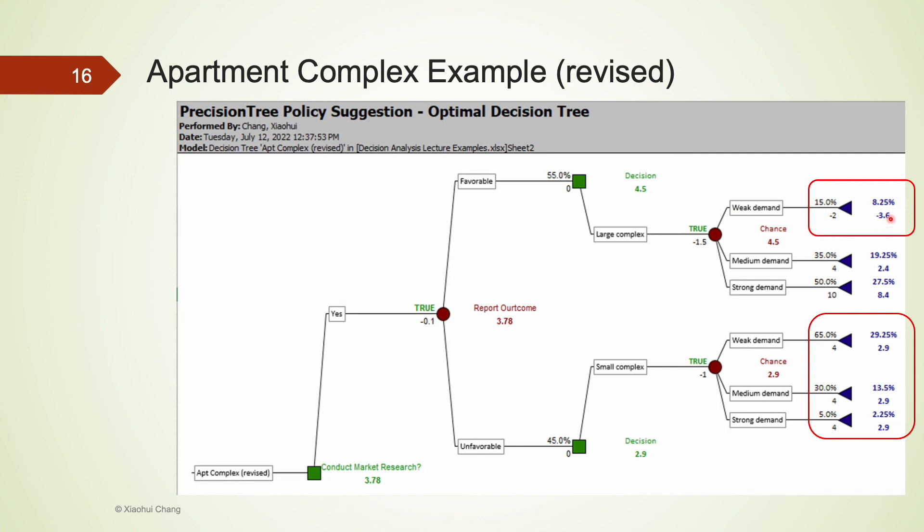The total probability of getting a payoff of $2.9 million is 20.25% plus 13.5% plus 2.25%. That's a total of 45%.